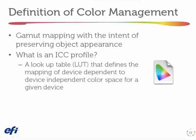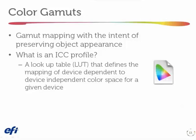Now we're ready to understand color management. Color management is the idea of mapping colors from one device dependent space to another device dependent space through device independent space, where we know what the colors look like — or we can say it's gamut mapping with the intent of preserving the appearance of objects or colors. We do all this with an ICC profile, which is simply an index or lookup table (LUT) that defines the mapping of one device dependent space to device independent space.